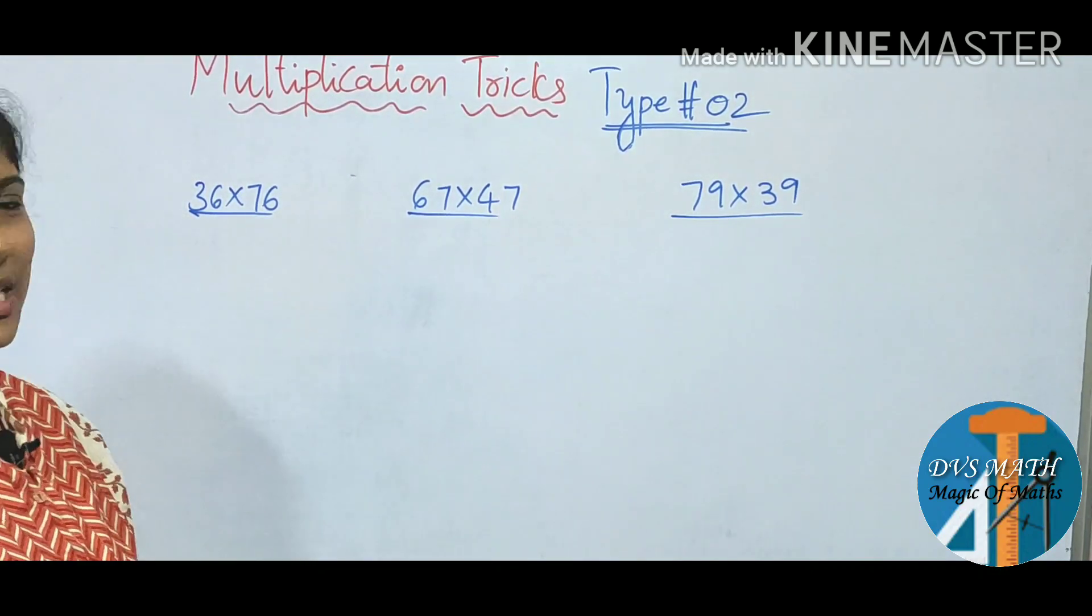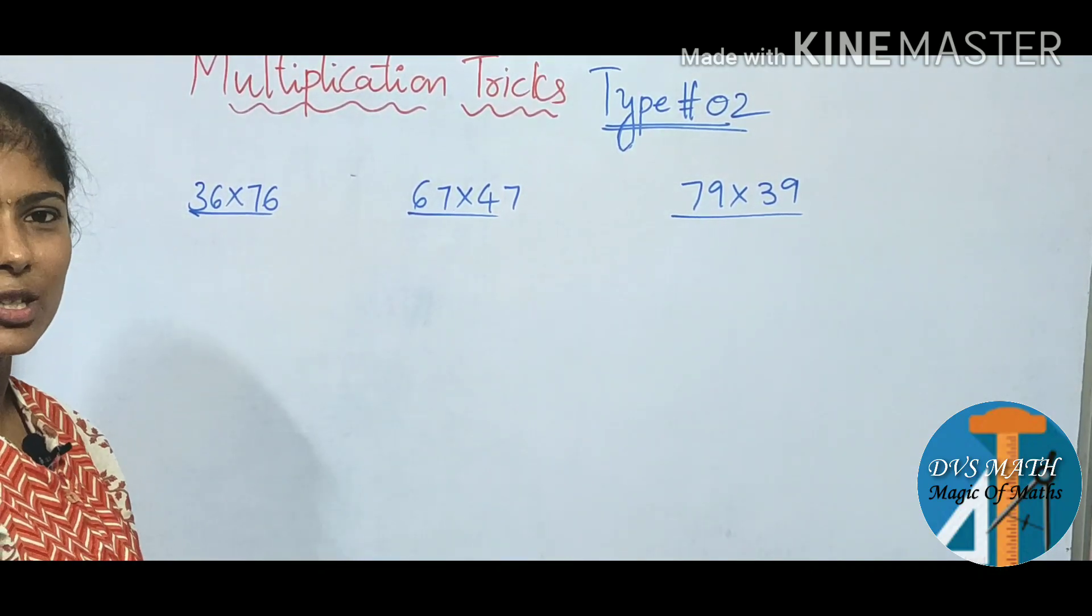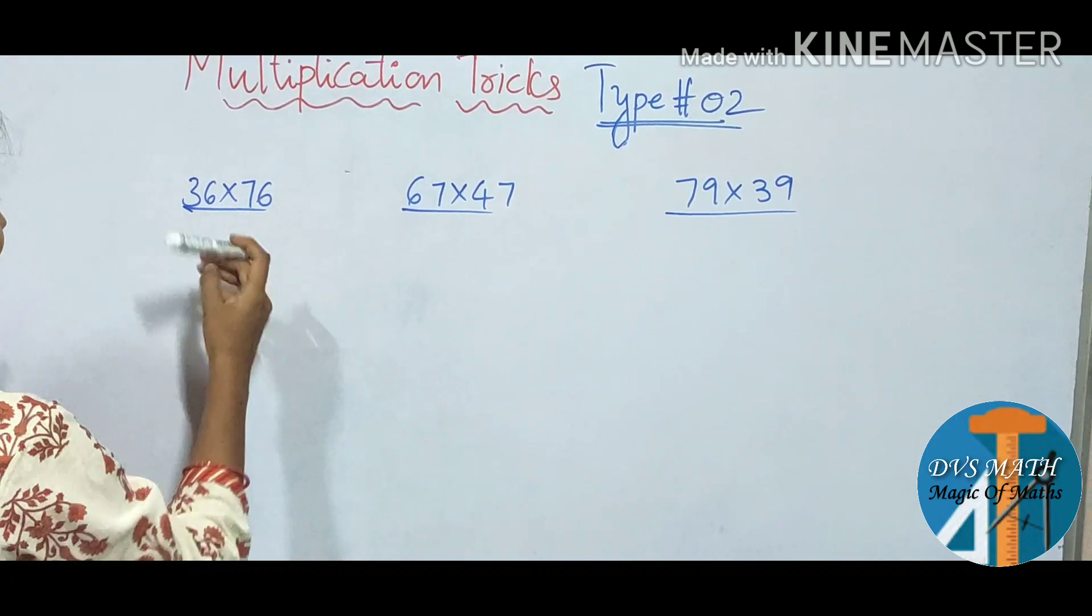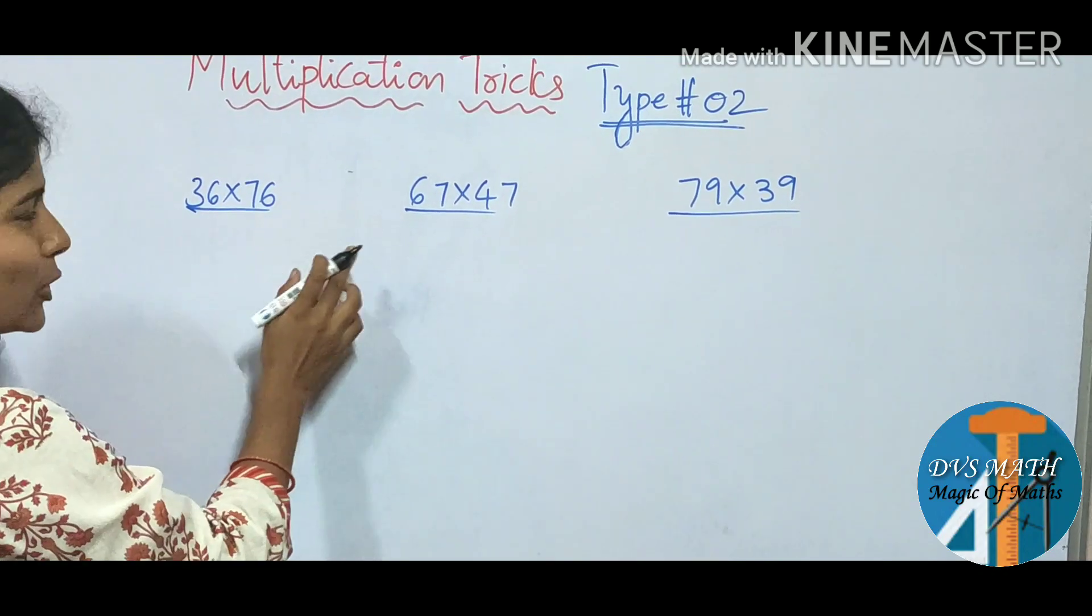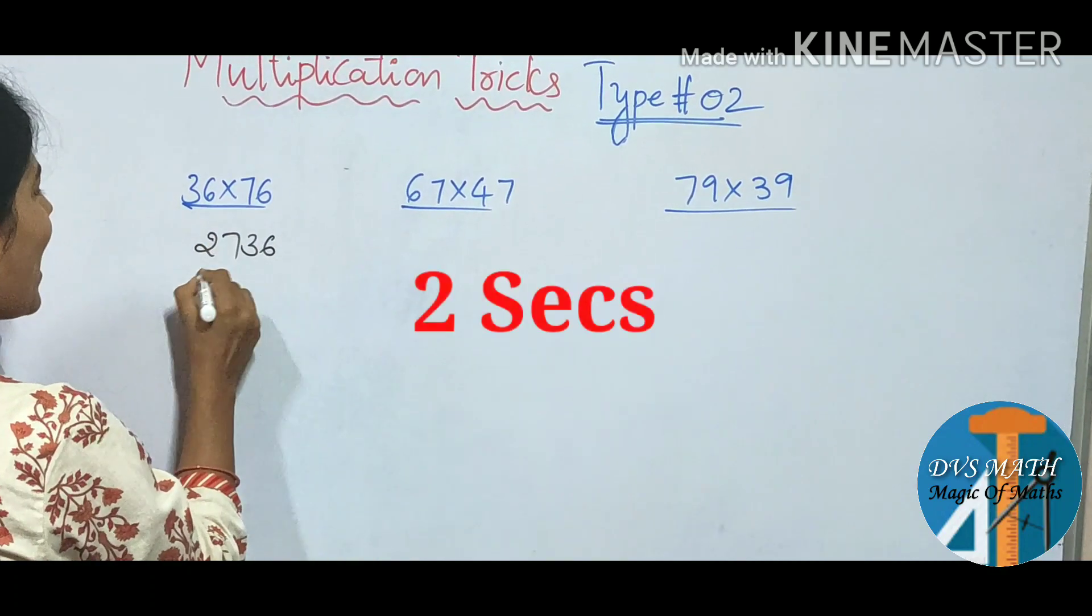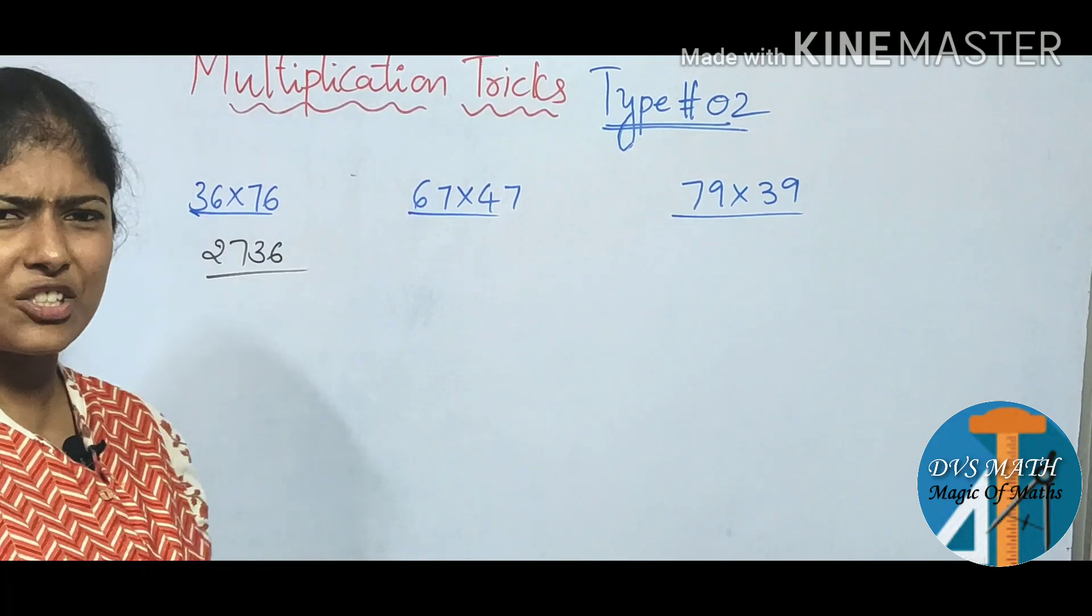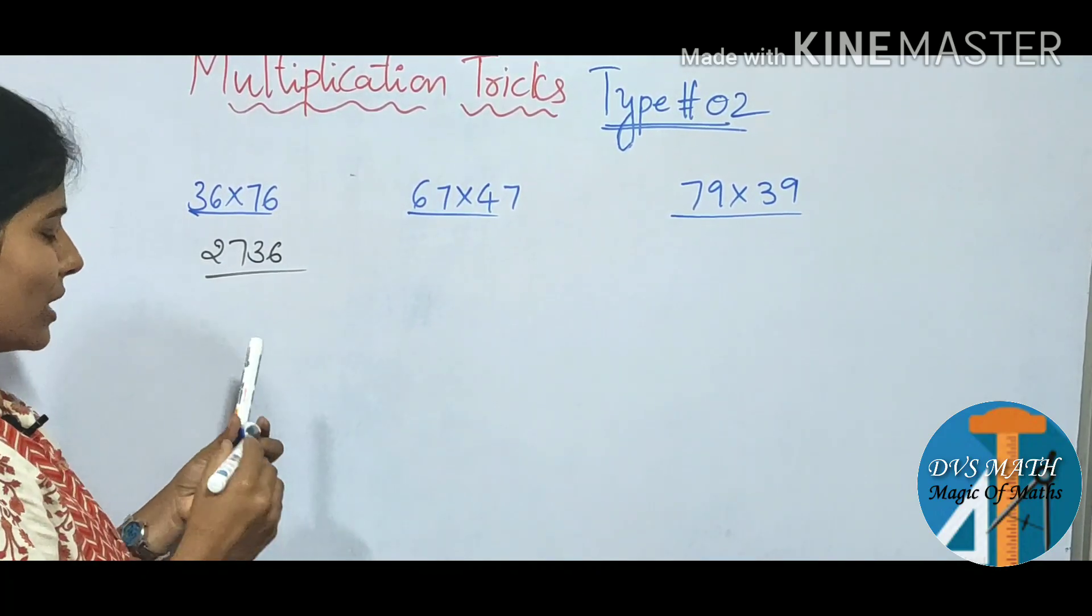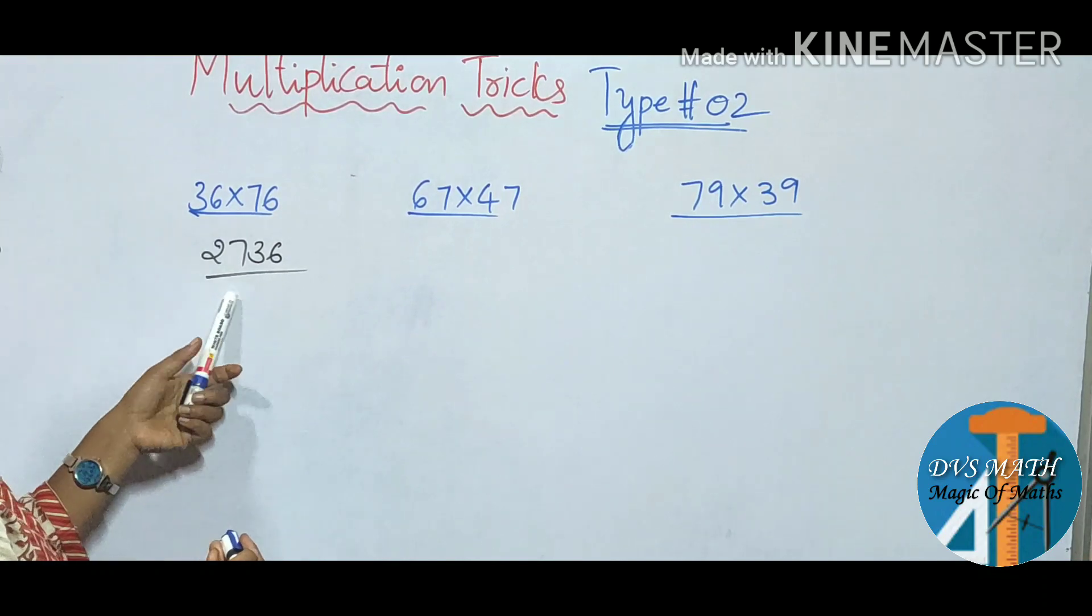So here we have numbers, multiplication, 2 seconds. So this is 36 into 76, so the answer is 2736. This is the time, it is not too late. So here we have a trick.